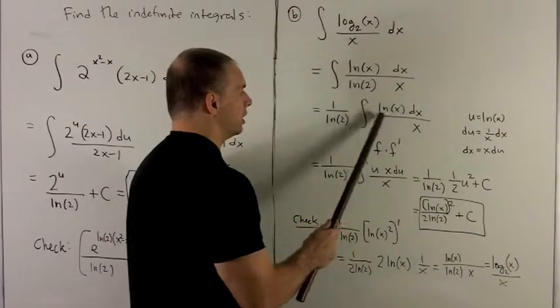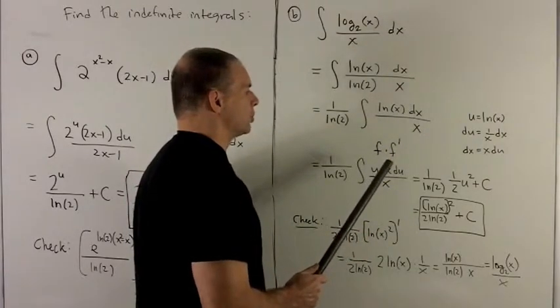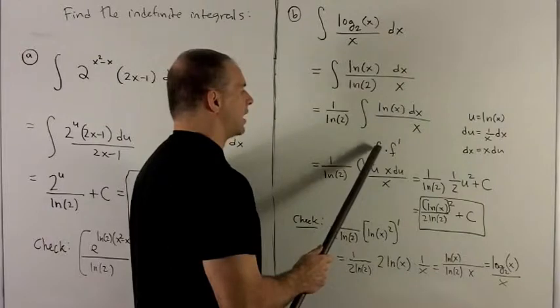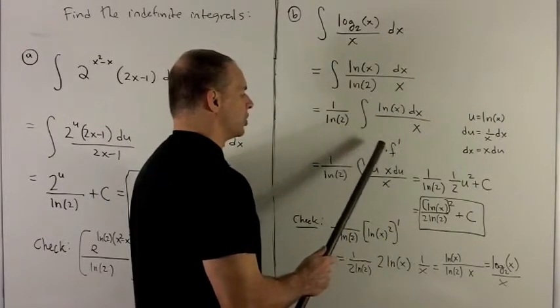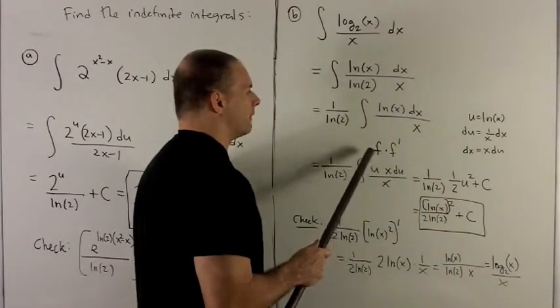Let's take a look. I have a function. I have the derivative of my function. So this will be a special u substitution where the inside is f and the outside is just, well, call it u to the 1.